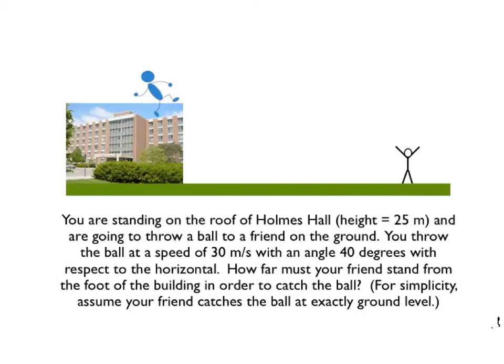Today we're going to work on a more complicated problem relating to kinematics. You're standing on the roof of Holmes Hall, which has a height of 25 meters, and you're going to throw a ball to a friend on the ground. You throw the ball at a speed of 30 meters per second at an angle of 40 degrees with respect to the horizontal. We're looking for how far your friend must stand from the foot of the building to catch the ball, assuming the ball is caught at exactly ground level.